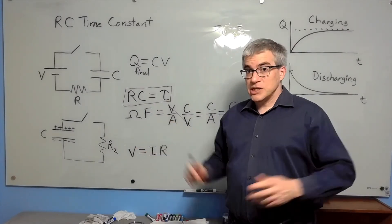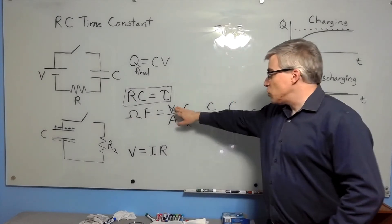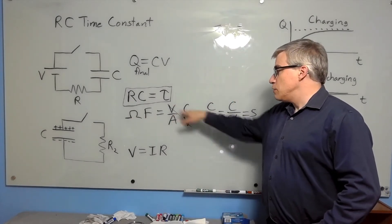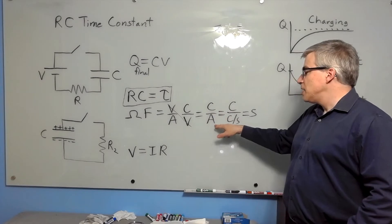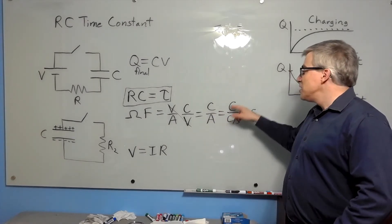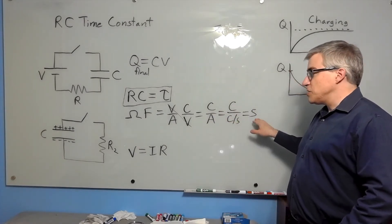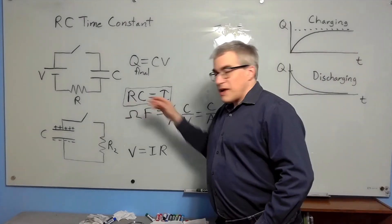First of all, that really is seconds. An ohm times a farad means volt per amp times coulomb per volt. Volts cancel, coulomb per amp. An amp is a coulomb per second, so that's coulomb over coulomb per second, which is seconds. So ohm times a farad really is a second.